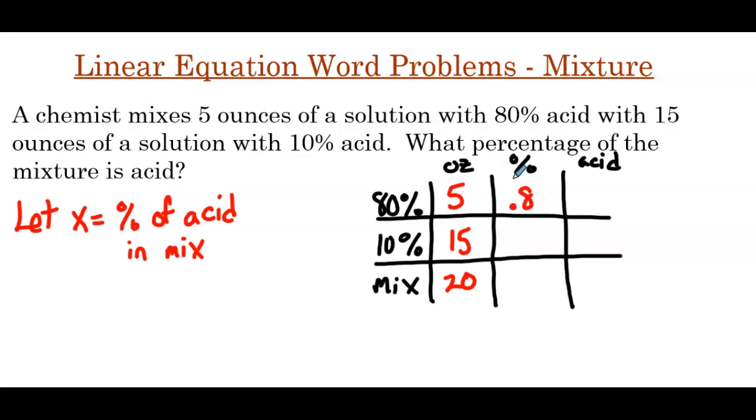The percentage in our 80%, that's 0.8, so the decimal equivalent of our percent. Then 10% would be 0.1. In our mixture, that's our variable, that's our unknown. So then the amount of acid in our first solution would be 5 times 0.8, which is going to be 4. And then 15 times 0.1 is 1.5. And then 20 times x gives us 20x. So now we're going to use this last column to create our equation.